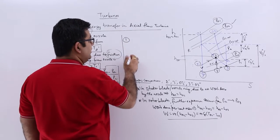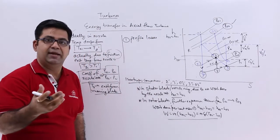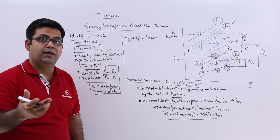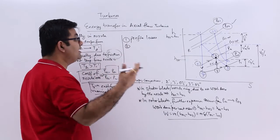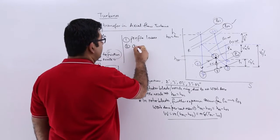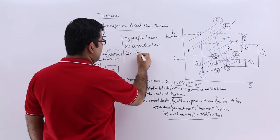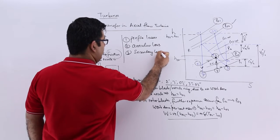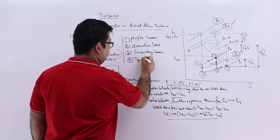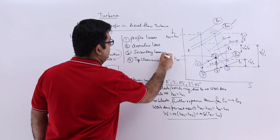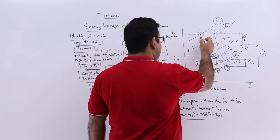The first reason for losses in blades is profile losses. There is a boundary layer that is created, and the separation of that boundary layer results in loss of energy flowing over the blades. The second reason is the annulus loss. The third reason is secondary losses. The fourth is tip clearance loss.